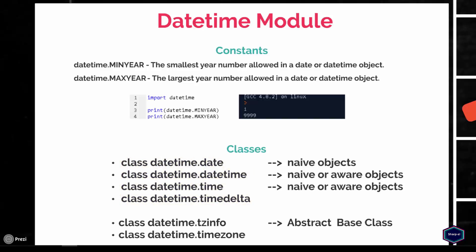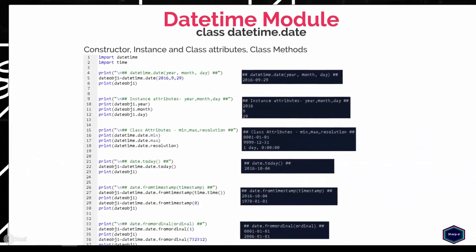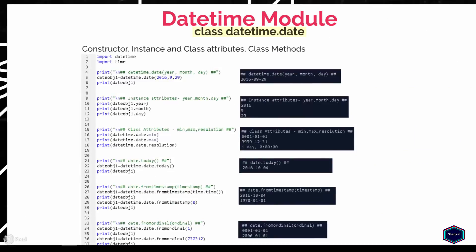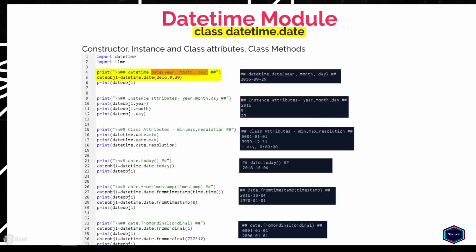Now let's start first with the date class. An object of date class represents a simple date consisting of year, month, and day. To create an object of date class, you can call the init method, which takes three arguments: a valid year, a valid month where January has integer value 1 and December has integer value 12, and a valid day in the given month and year. If any of the three arguments is not valid, Python raises a ValueError exception.